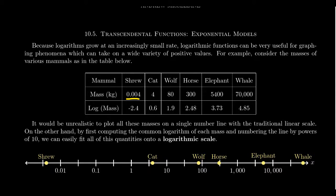The average adult male shrew weighs 0.004 kilograms — those are not very heavy — as opposed to a cat, which weighs 4 kilograms. The wolf is 80 kilograms. This average horse weighs 300 kilograms. The elephant weighs 5,400 kilograms. And then the whale species weighs on average 70,000 kilograms.